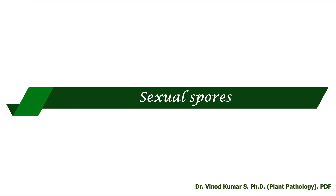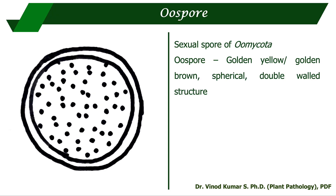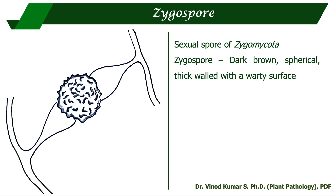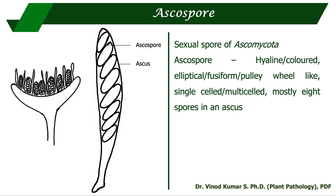That is all about asexual spores. Now coming to sexual spores: as discussed, domain Eukarya has three kingdoms — Protozoa, Chromista, and Fungi. Under Chromista, phylum Oomycota, the sexual spores are called oospores — 'oo' means egg — and they are golden yellow or golden brown, spherical, and double-walled. The sexual spores of Zygomycota are called zygospores: dark brown, spherical, thick-walled with a warty surface, always attached to tongue-like suspensors on both sides. The sexual spores of Ascomycota are called ascospores, which may be hyaline or colored, elliptical or fusiform or pulley-wheel-shaped, single-celled or multi-celled, with mostly eight ascospores per ascus.